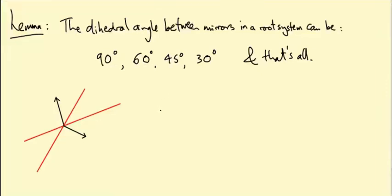What do I mean by the angle between two mirrors? Here's an example. I've drawn two red mirrors. Am I talking about this angle or this angle between them? I'm talking about the smaller angle, because two mirrors at 60 degrees also form a 120 degree angle.